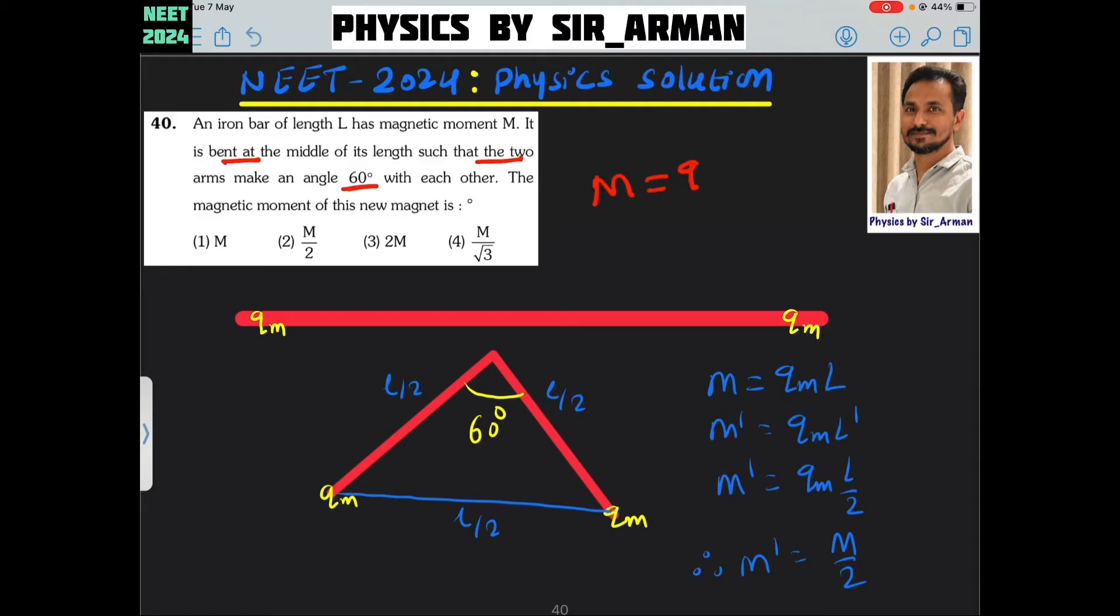Now the magnetic moment is, the formula is the pole strength into length. So, in the initial case, the length is L and the pole strength is Q, Q M.